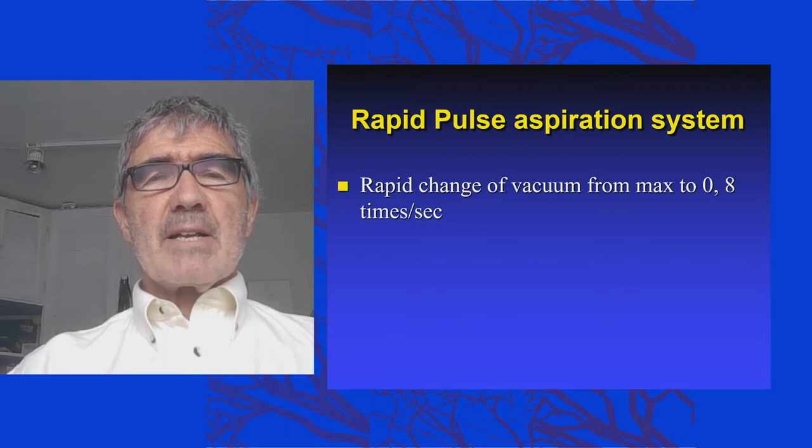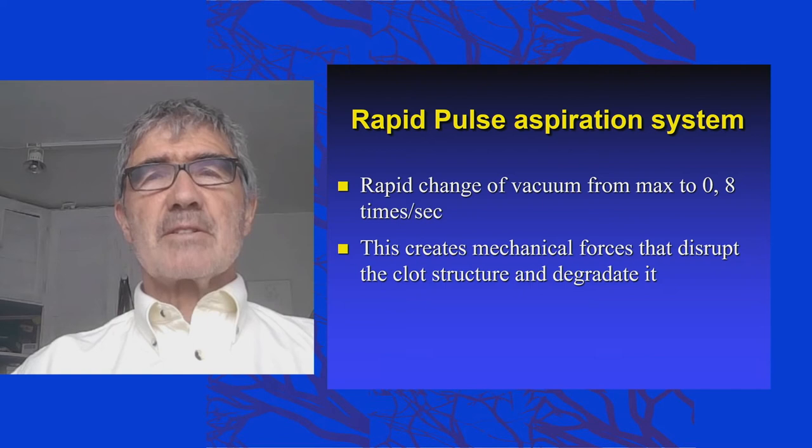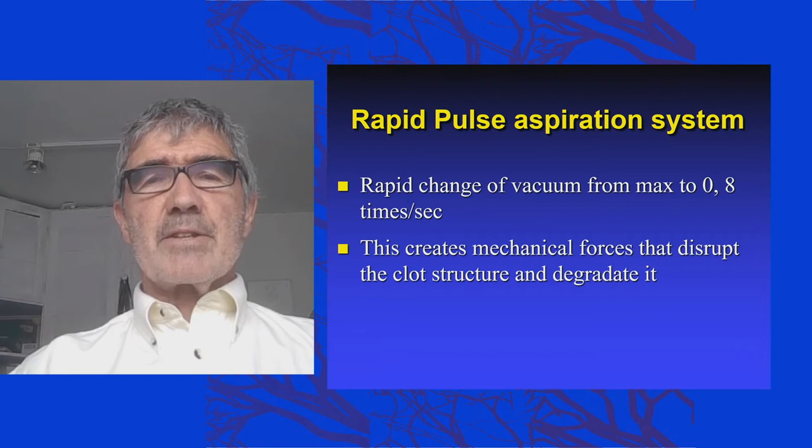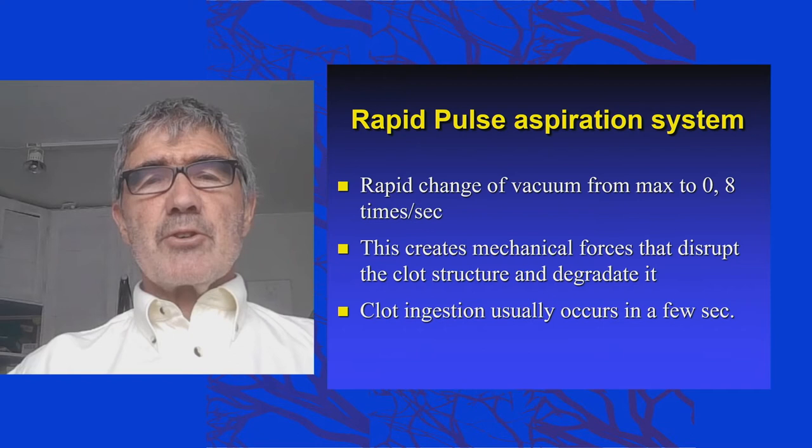The Rapid Pulse aspiration system gives us a new type of aspiration, changing the vacuum from maximum to zero eight times a second. This is a fantastic, ingenious invention — it creates mechanical forces that disrupt the clot structure and degrade it.